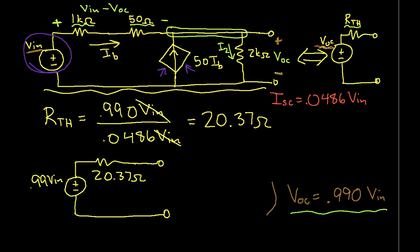So when we have a dependent source, we have to compute the Thevenin equivalent resistance as the open circuit voltage divided by the short circuit current. There's no other way to do that. So this concludes this video. Thanks for watching.